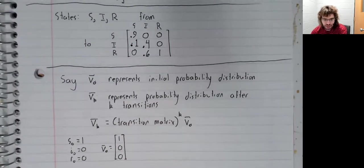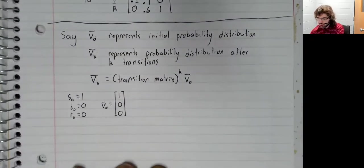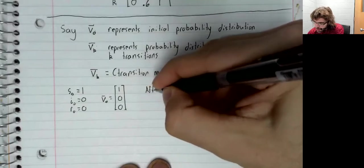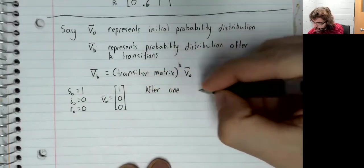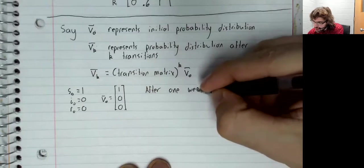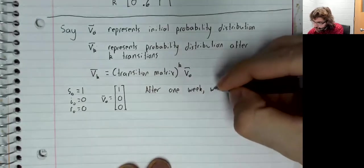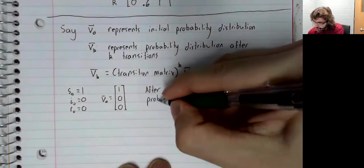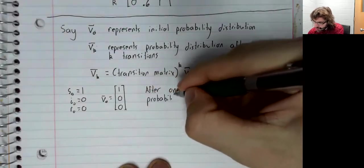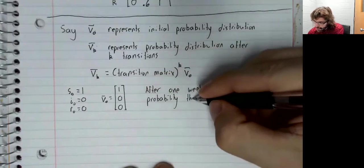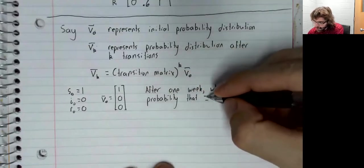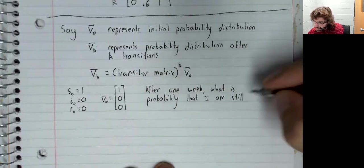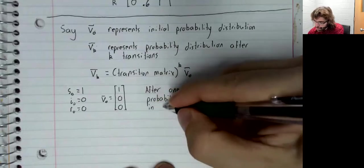So every day a transition occurs, and I ask the question, after one week, what is the probability that I am still susceptible?